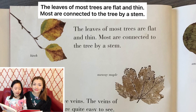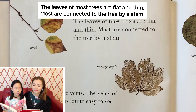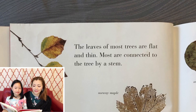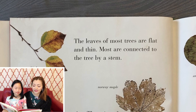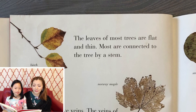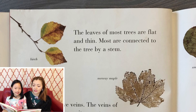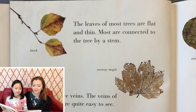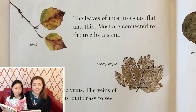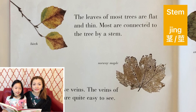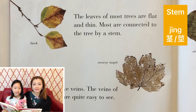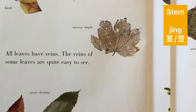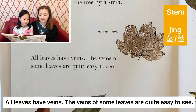The leaves of most trees are flat and thin. Most are connected to the tree by a stem. 大部分的叶子都是平而且薄的。它们大多数都通过植物的茎和树相连。我们来学一个词：Stem，茎。